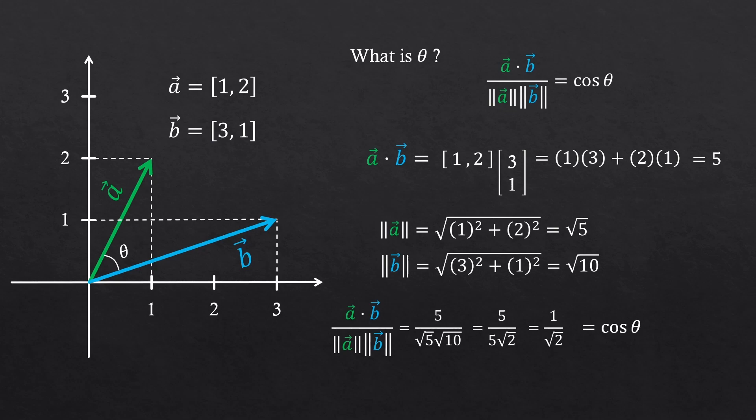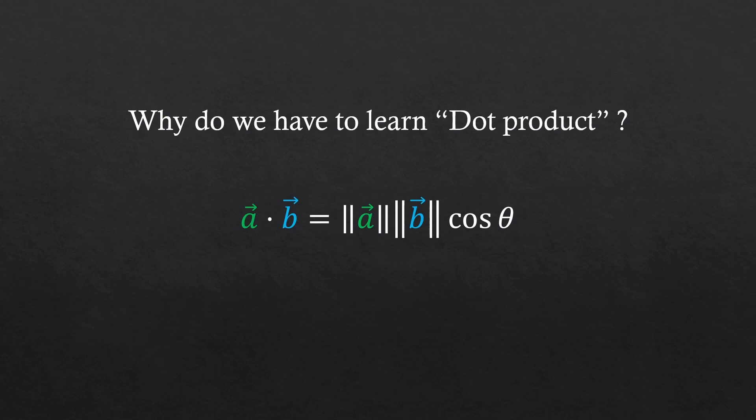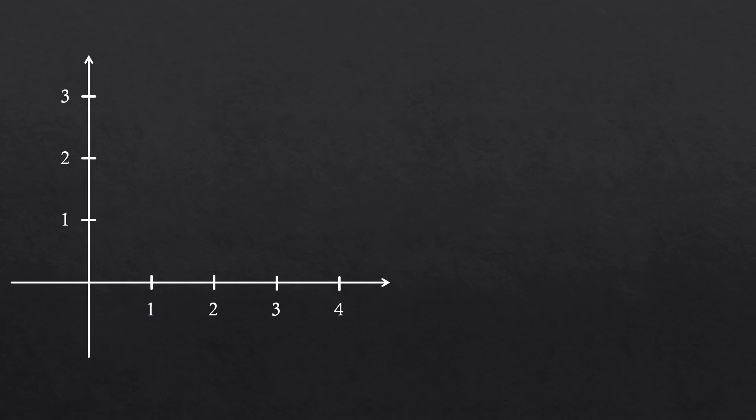You could use a calculator to find what theta is now. Or some of you might already know what this is. So why do you have to learn the dot product? To find angle between two vectors. Wait, we're not done yet. Let's see if this makes sense.